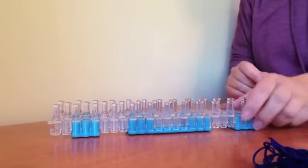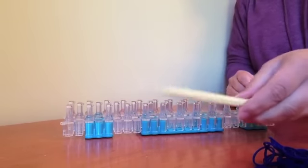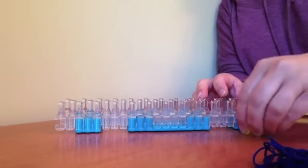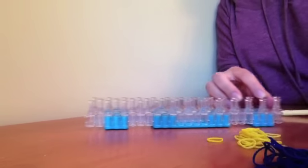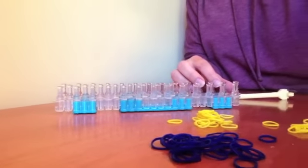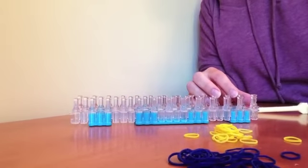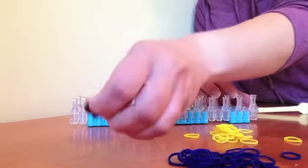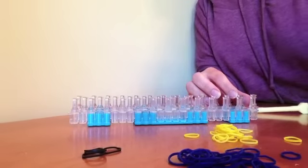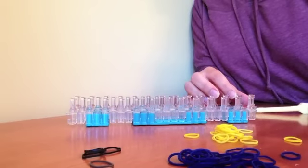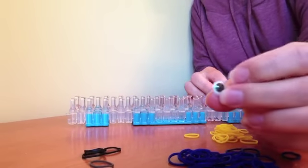So the first thing you need your loom, your hook, some yellow bands, and some blue bands, and a few black bands, one gray band, a white band, and then you're gonna need this googly eye.